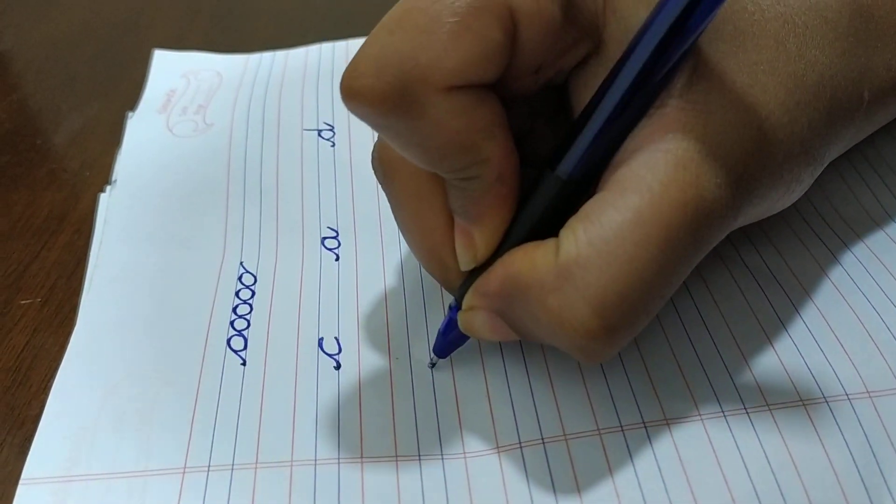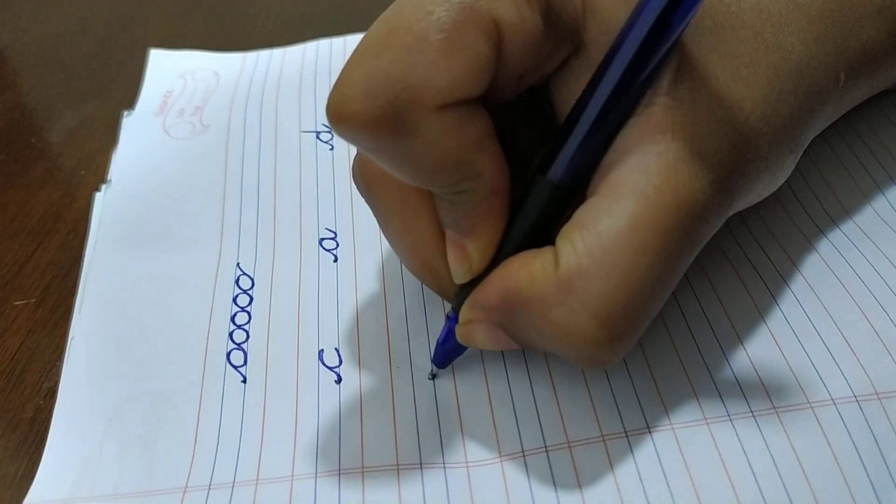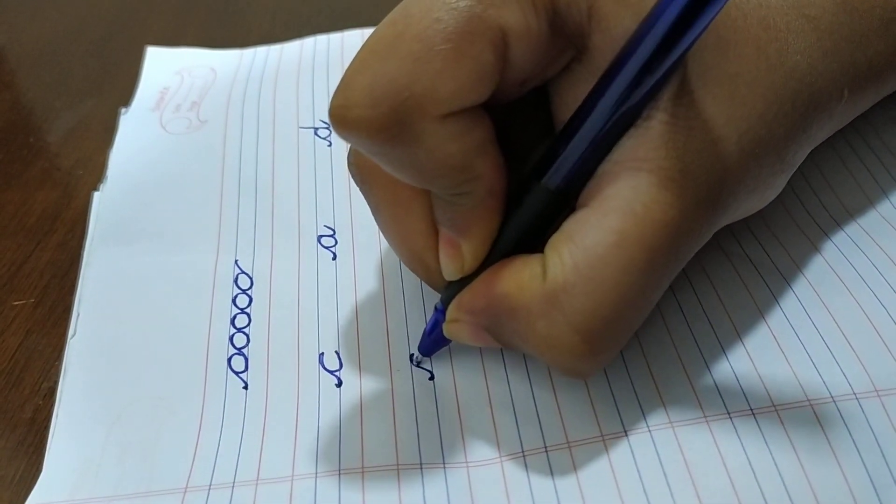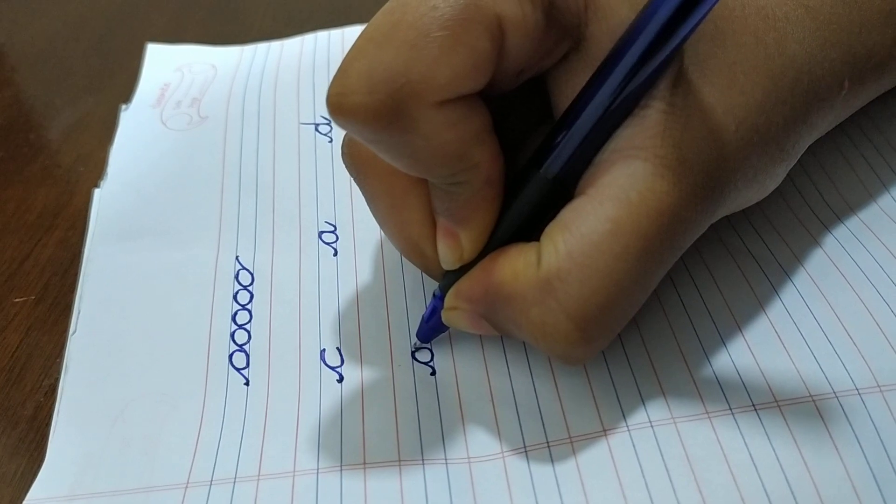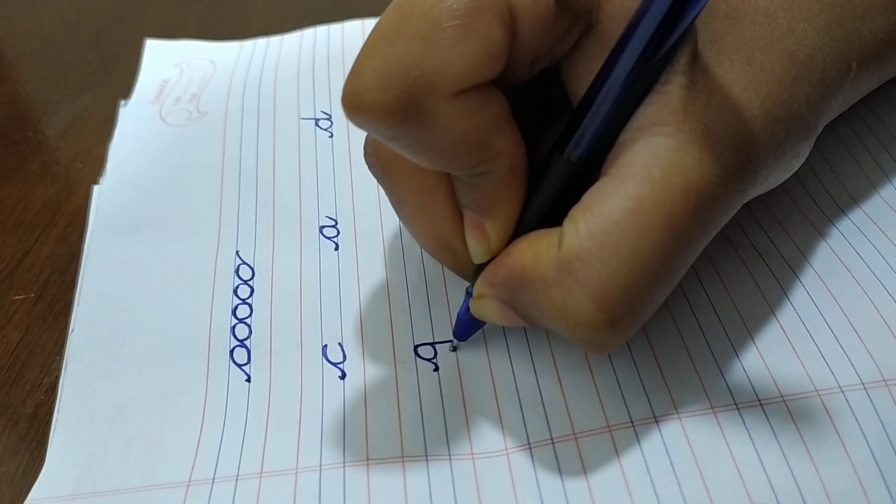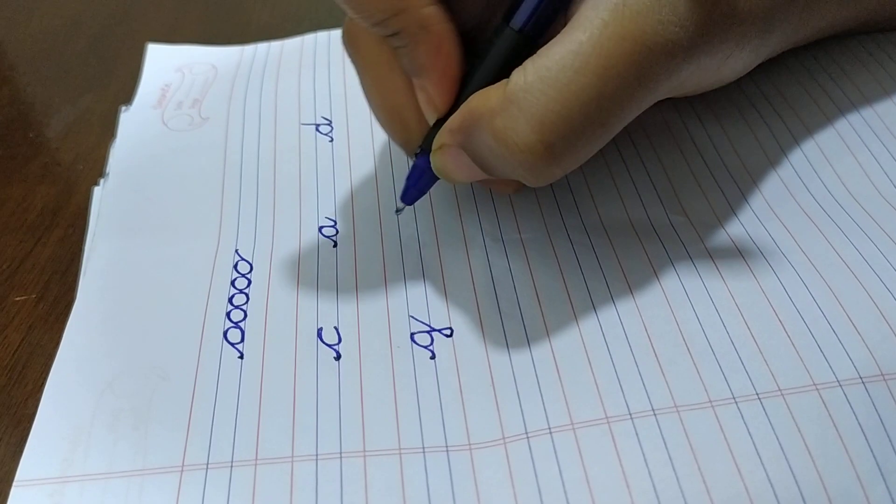Now come to the next letter, that is g. For this, make a dot and draw a stroke. Move it down, touch to the red line and close. Again I will show you.